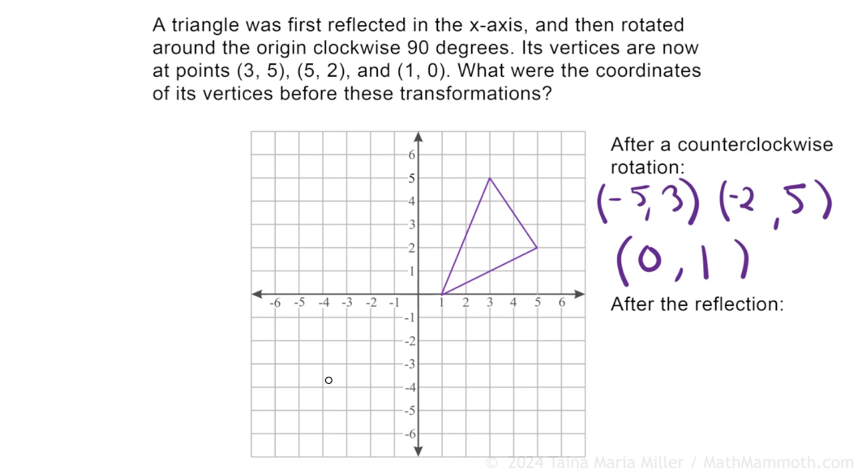So in this kind of reflection, say for example, this point here, if it's reflected here, its x-coordinate does not change. But its y-coordinate becomes the opposite. For example, negative 4, 1 becomes negative 4, negative 1.